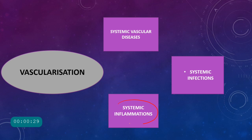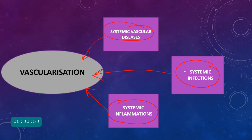Whenever there is a systemic inflammation, the uvea can get involved because of its vascularization. Systemic infections can also infect the uvea directly, since the uvea is the only part of the eye with blood vessels, and these infections can come straight to the uvea and cause uveitis. Similarly, systemic vascular diseases can also affect the uvea.